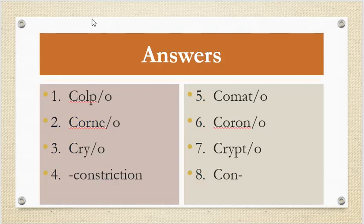Okay, these are the answers to the previous slide. Number 1 is colpo. Number 2, corneo. Number 3, cryo. Number 4, constriction.